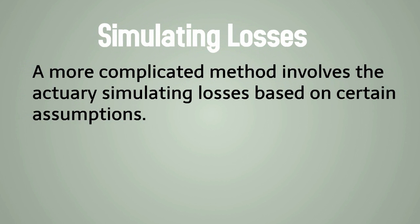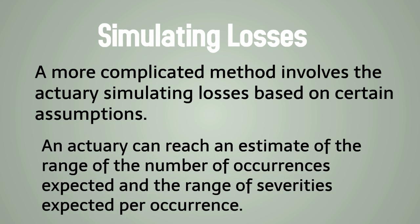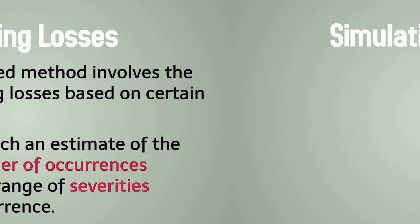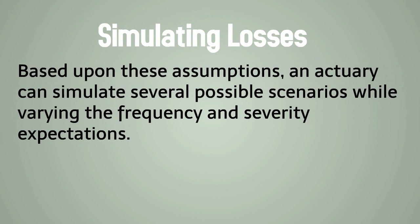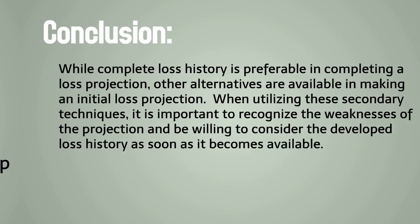A more complicated method involves the actuary simulating losses based on certain assumptions. An actuary can reach an estimate of the range of the number of occurrences expected and the range of severities expected per occurrence. Based upon these assumptions, an actuary can simulate several possible scenarios while varying the frequency and severity expectations. Using these scenarios, the actuary can develop a central estimate and a range of possible outcomes.